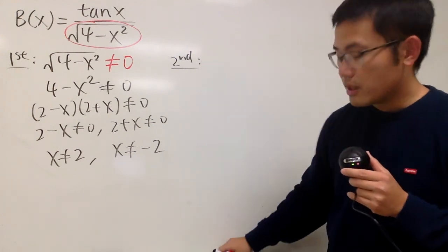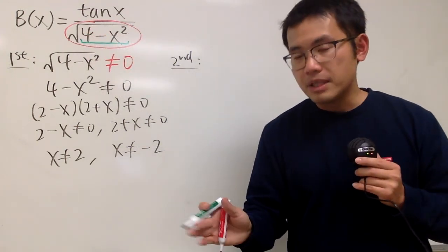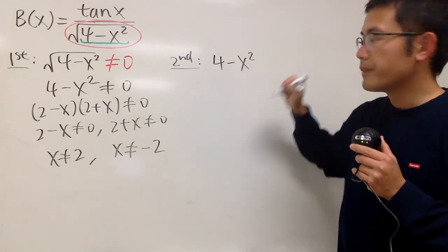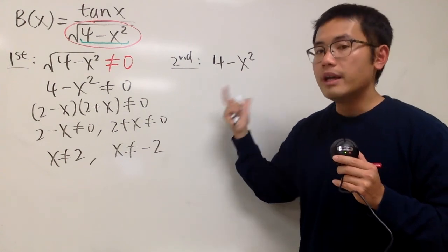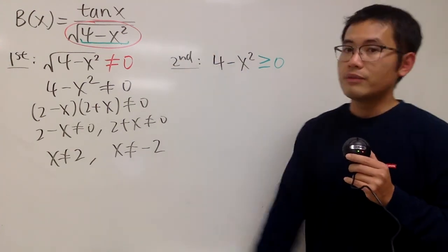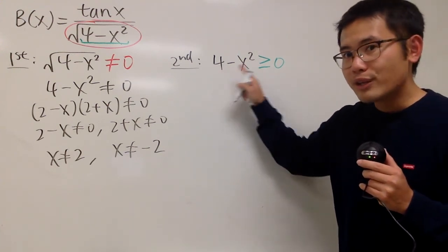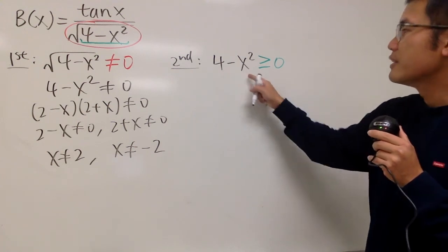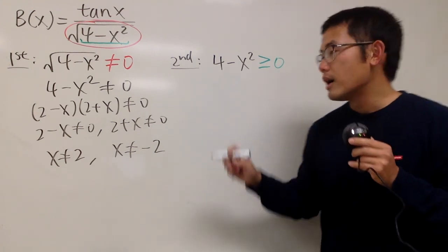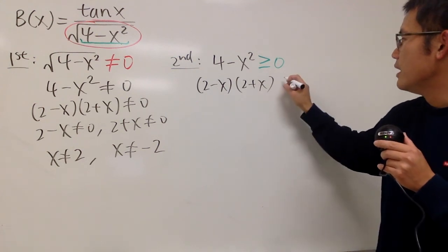Moving on to the second restriction: we have a square root, and we have to remember that the inside of the square root cannot be negative. The inside — 4 minus x squared — has to be greater than or equal to 0. So these are two conditions so far, and we also have to talk about tangent. For this nonlinear inequality, factor it — do not move things around or square both sides, because you wouldn't know where the inequality should go. Factor to get (2 minus x)(2 plus x) ≥ 0.